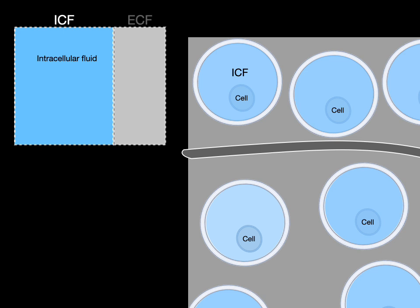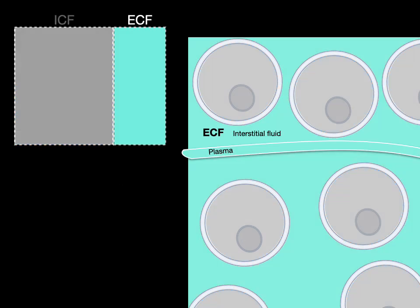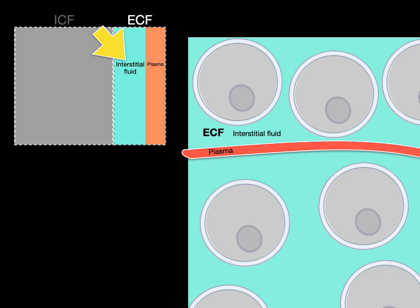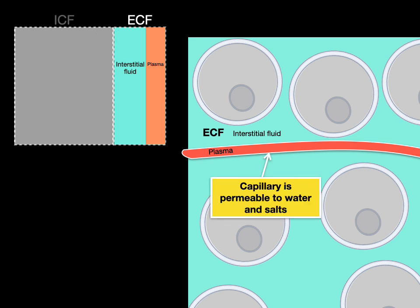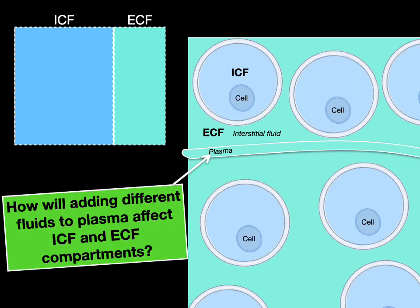The larger rectangle represents a collection of all the intracellular fluid for all the 70 trillion cells inside the body, which is separated from the extracellular compartment via the cell membrane. The extracellular fluid that surrounds all the cells really consists of plasma and interstitial fluid. When talking about osmolarity, because the capillary is permeable to water and salts, we often consider extracellular fluid to put plasma and interstitial fluid together. The question: how will adding different fluids to plasma affect intra- and extracellular fluid compartments?